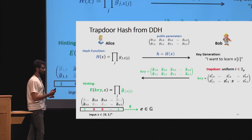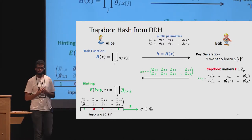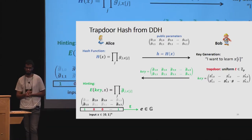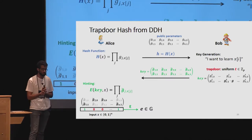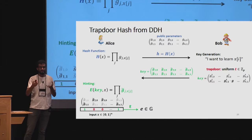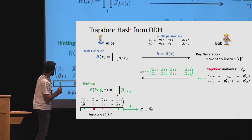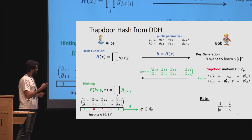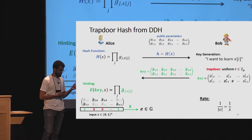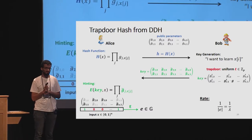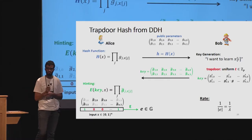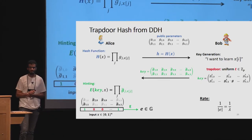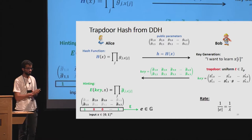Alice computes the hint very similarly to how she computed the hash, except using the g-tildes instead of the g's. She goes over the matrix, takes the corresponding group element from every column, multiplies everything together, and gets a group element which is the hint e. The rate of this construction is the inverse of the hint length; since hint length must be proportional to the security parameter for DDH security, the rate is roughly 1/lambda.